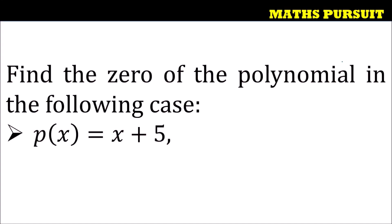The given question is find the zero of the polynomial in the following case, and the given polynomial is p(x) = x + 5. So let us see how we can find out the zero of the given polynomial.